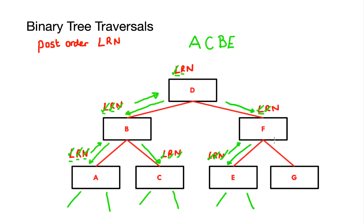Having traversed the left subtree at F, the rule states I must now traverse the right subtree at F. I move down to G and rewrite my rule — left, right, node. I traverse the left subtree at G: non-existent. I traverse the right subtree: non-existent. Then I go back up to the node itself and write down G. Once completed I move back up to F. I've completed both the left and right subtrees at F, so I take the node itself and write that down.